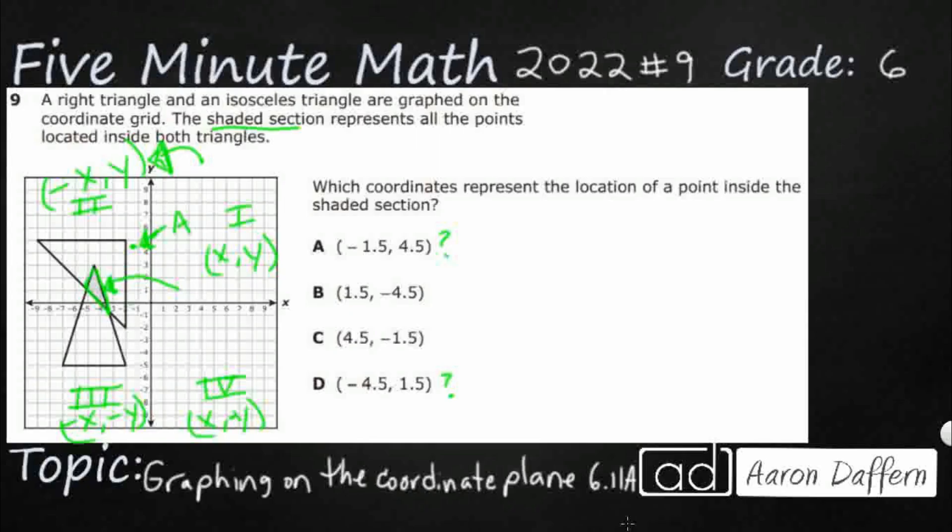That's my A right there. I've got negative 1.5 and then a positive 4.5. So let's check D.